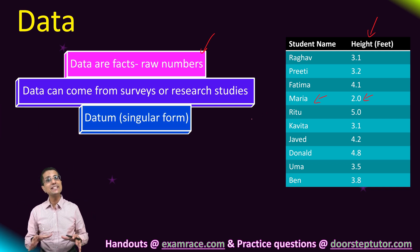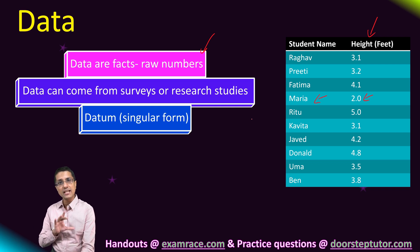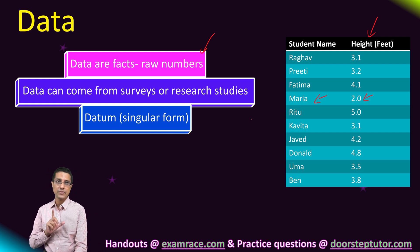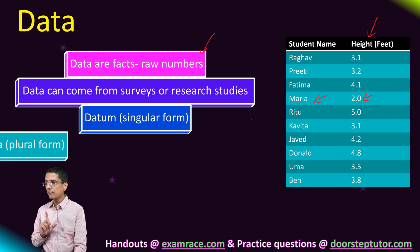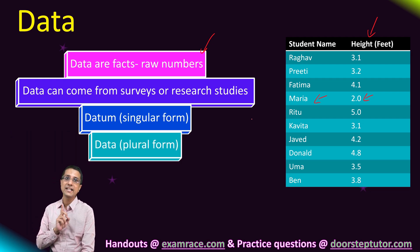Data actually is a plural term. The singular for data is datum. So a single fact, a single number, we'll just call it datum.